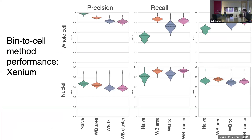Based on my reading of the methods, they ran the whole pipeline with default settings using each of the four bin-to-cell assignment methods, then called cell types, and compared the classified cell types against the pathologist's annotations to evaluate performance. They used three common machine learning metrics, starting with the Xenium dataset.